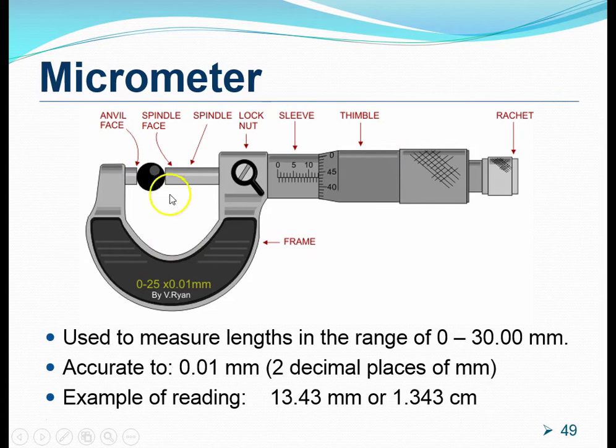When we want to measure the length of an object, the object is placed between this anvil and the spindle. The anvil is fixed, and the spindle can be moved to the left or to the right by turning the ratchet. Once you have clamped the object between the anvil and the spindle, some readings will be shown on the sleeve as well as the thimble.